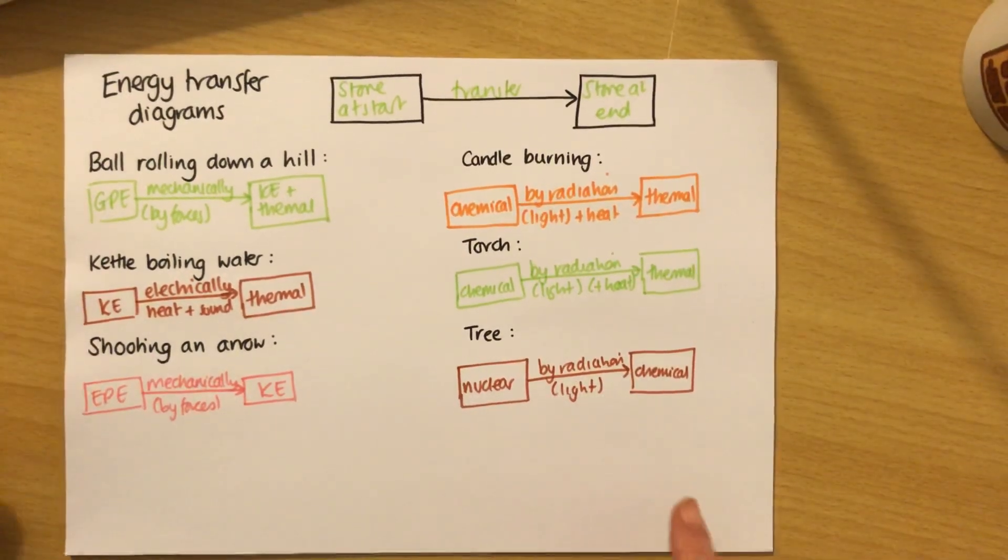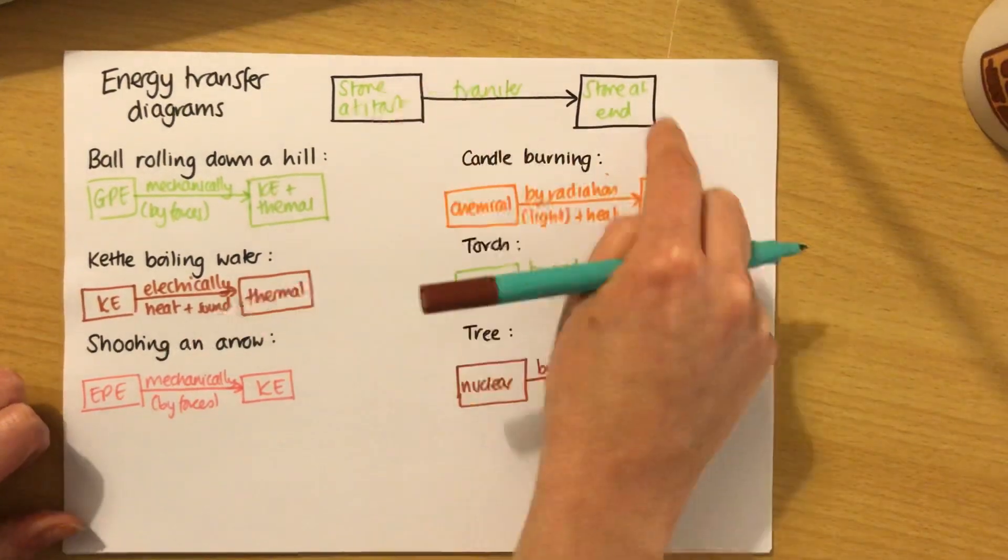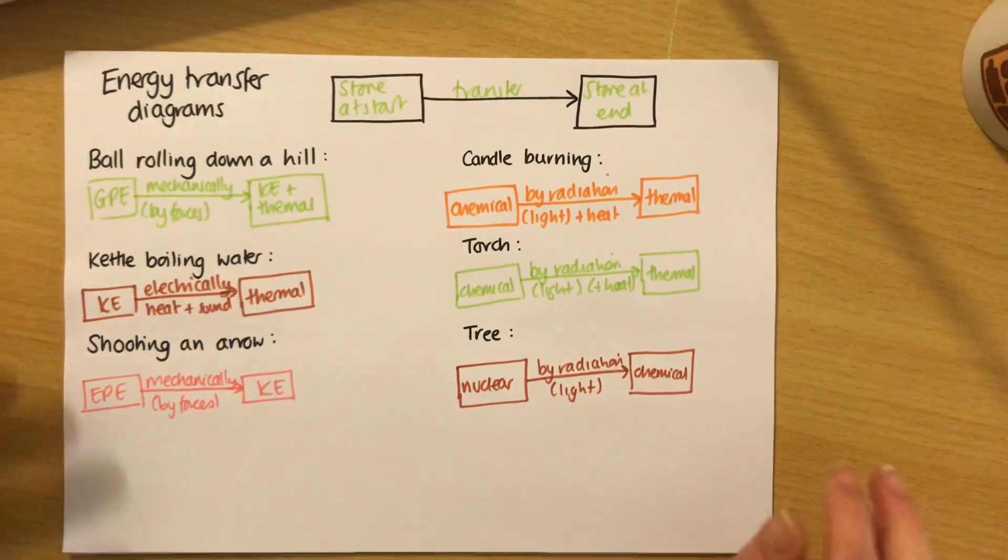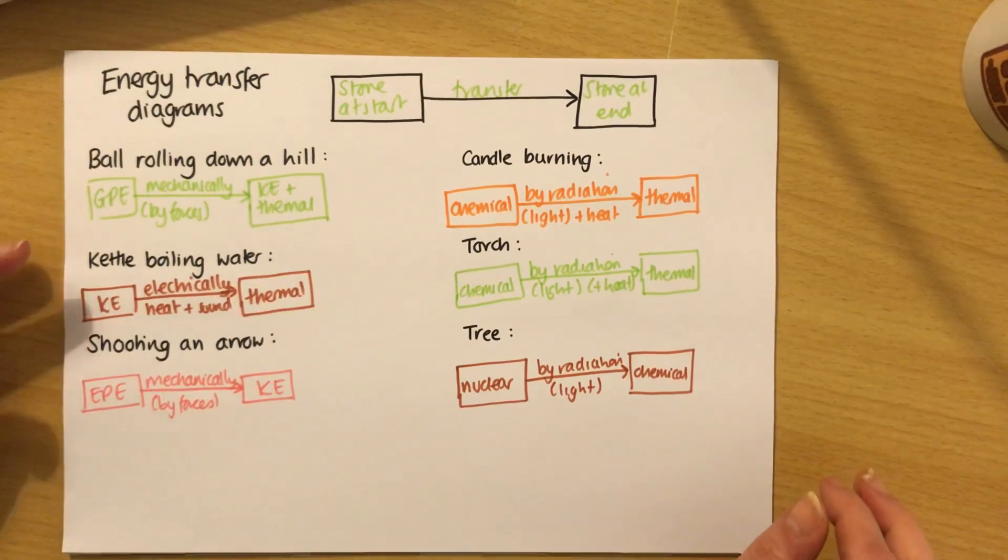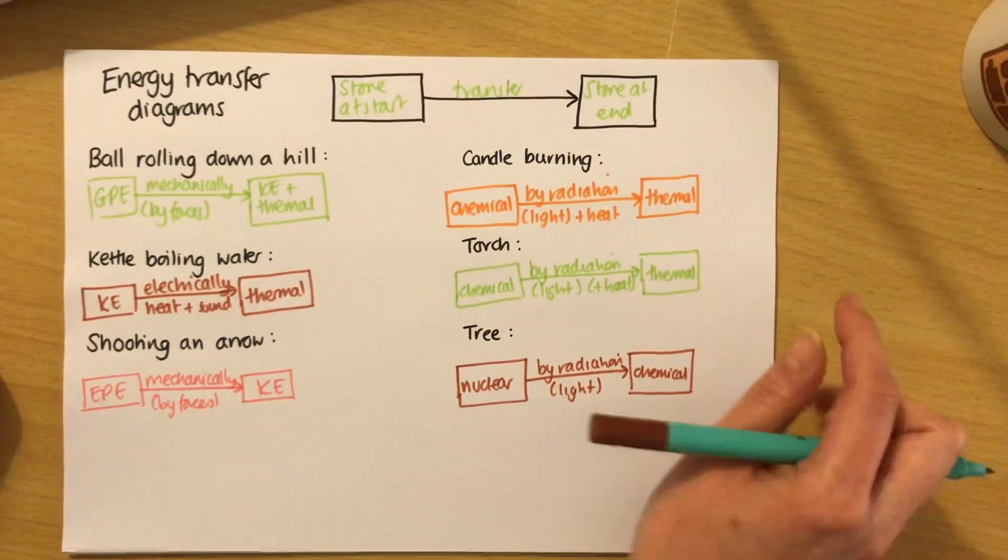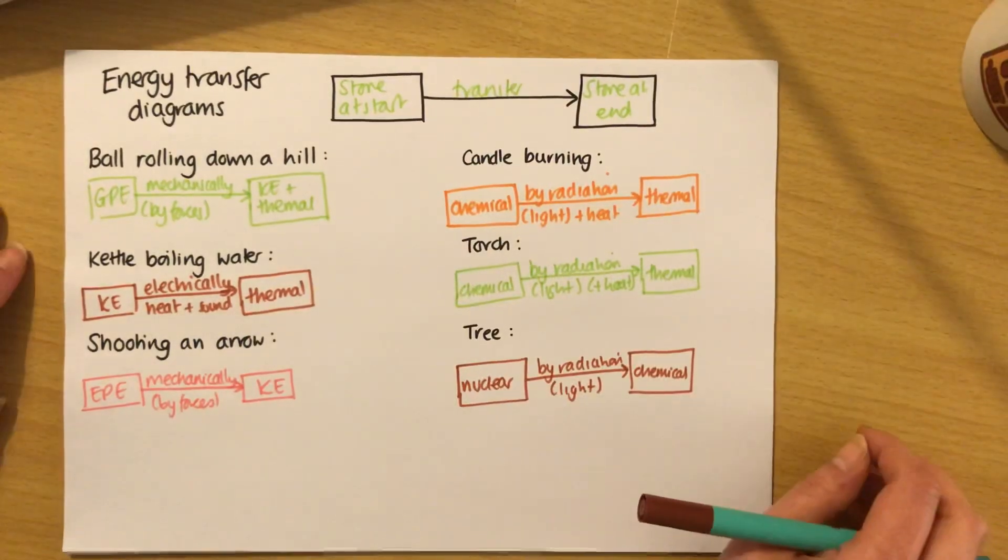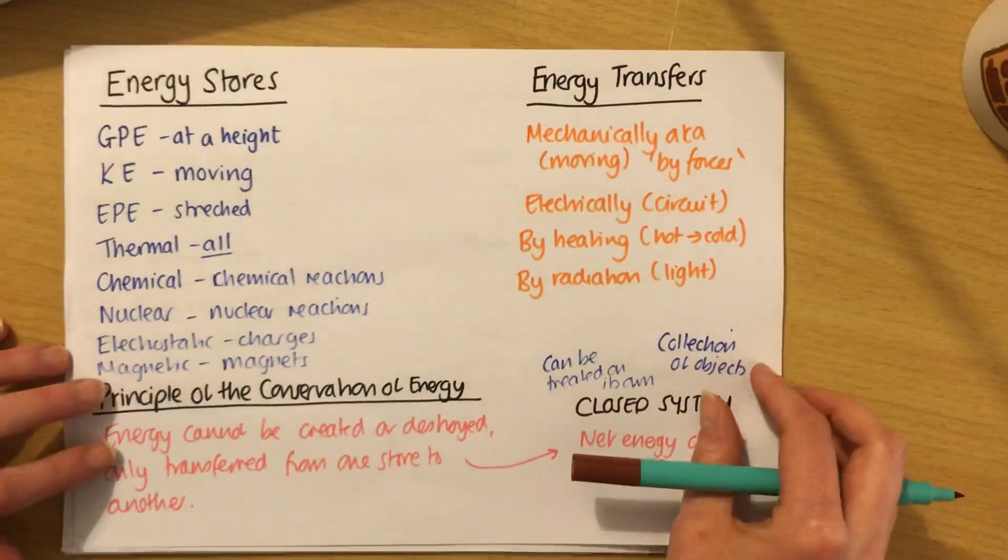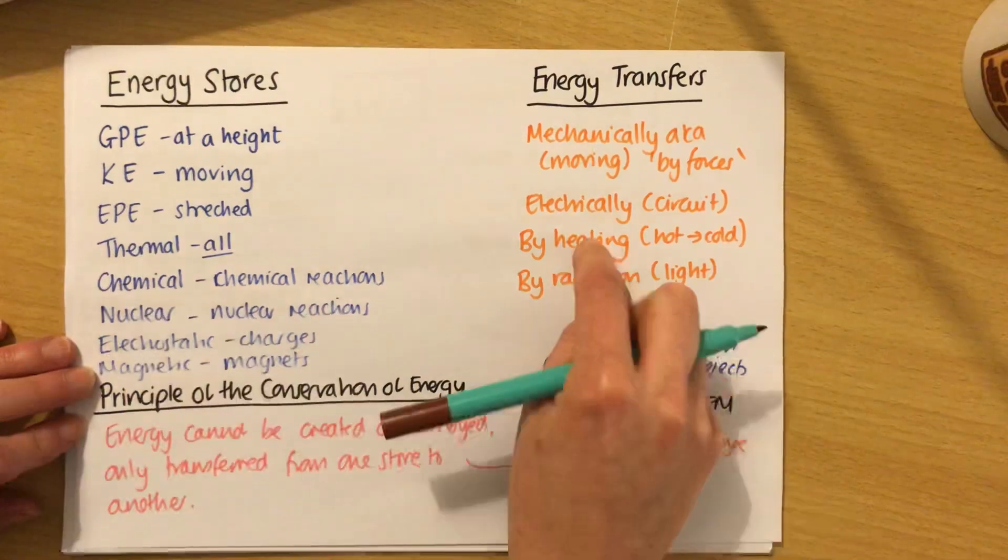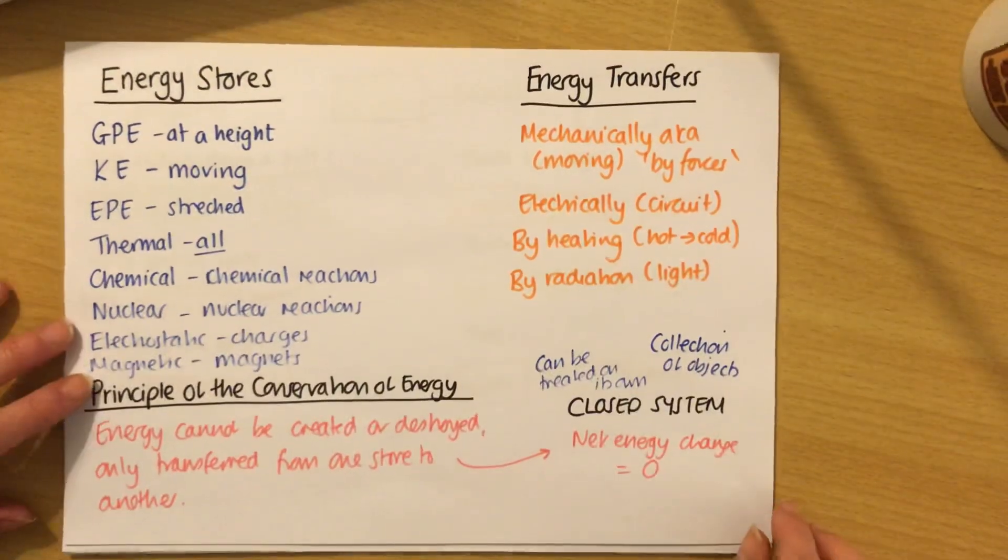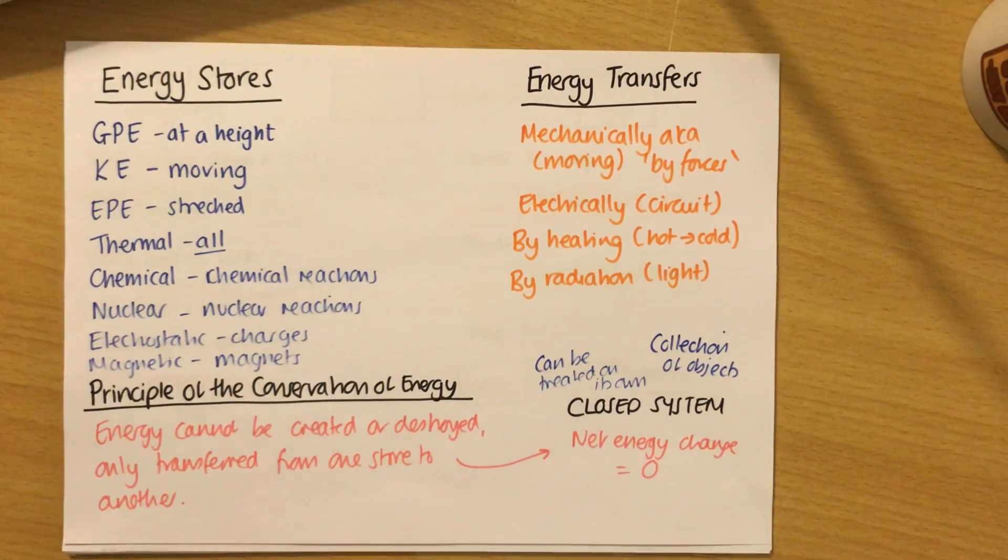So these are quite tricky. Just always think about what's at the start, what's at the end, and then how does it get between those two? If you're not sure, if you can't work it out, the answer is probably mechanically by forces. It's pretty obvious when it's by light or by sound or by heat. But the forces one's sometimes a bit tricky. Be really careful, check that your stores are actually stores and not transfers, and vice versa, that your transfers are actually transfers and not stores. A lot of people like to write light at the ends here. Be really, really careful that you know and make sure you really know these eight different stores and the four different transfers, and you're clear which ones are which and you don't get them confused. So that's energy stores and energy transfers. Next, we're going to look at kinetic energy and GPE, and then also at work and power. Hope you've enjoyed it. Thank you, see you next time.